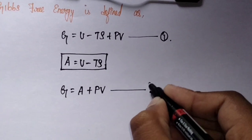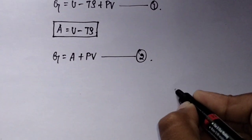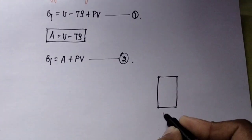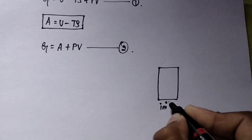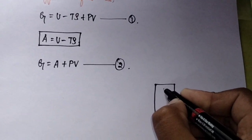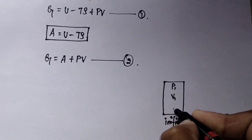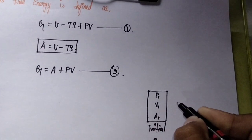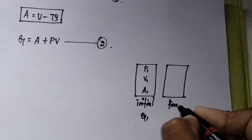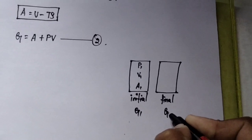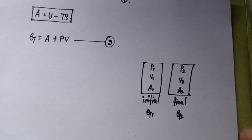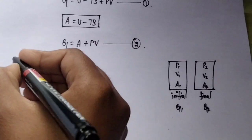Now consider a closed system. Consider this as the initial state and mark it as G1, where pressure is P1, volume is V1, and Helmholtz free energy is A1. Consider the same system in the final state, marked as G2, where pressure is P2, volume is V2, and Helmholtz free energy is A2.